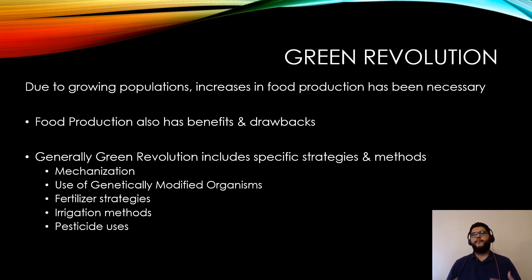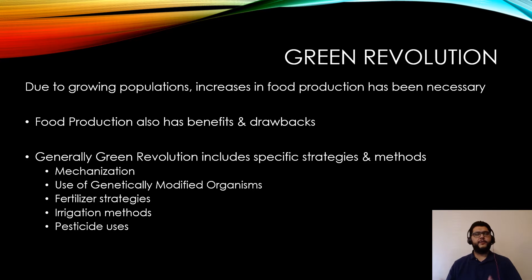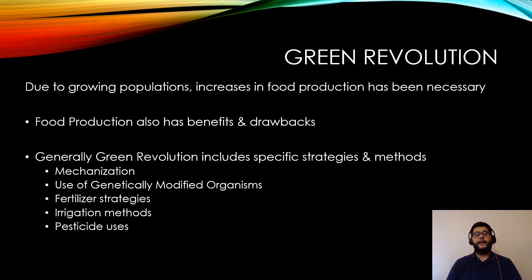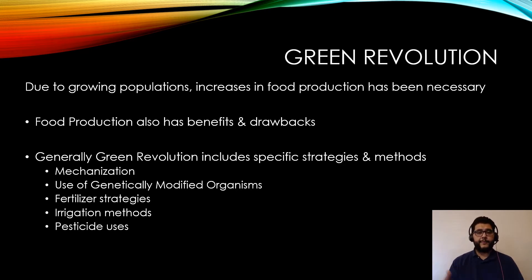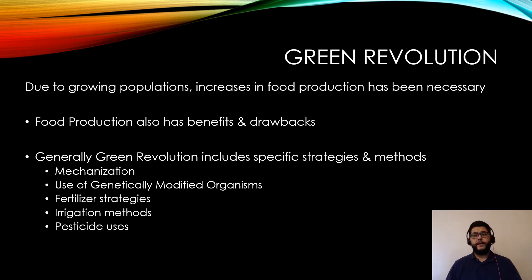Changes have had to be made to the way we grow food. Humans began as hunter-gatherers and eventually switched over to agriculture, saving seeds and growing what they needed. That helped populations grow initially, but food production has had to increase exponentially to sustain the population — and this is generally called the Green Revolution.